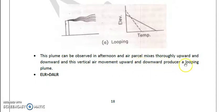And the air parcel mixes thoroughly upward as well as downward, and this vertical air movement upward and downward produces a looping plume. When the smoke moves up and down it produces big loops, that's why the name is looping plume.